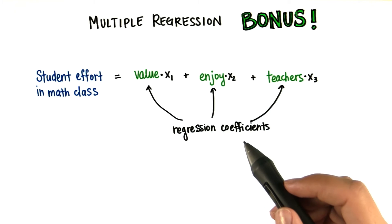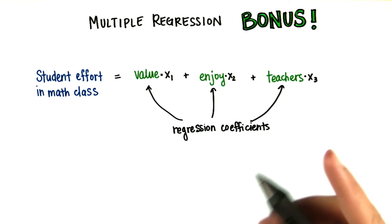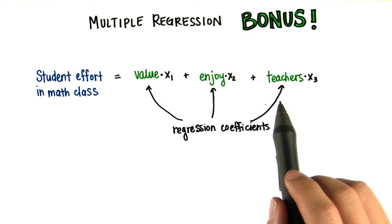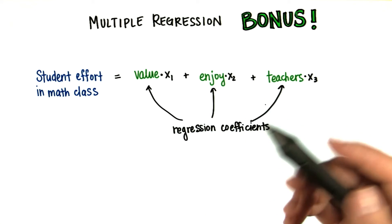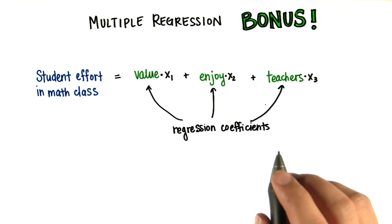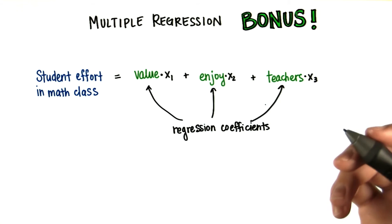These coefficients tell us the rate of change in y given a one unit change in each respective variable, holding the others constant. In other words, we see the mathematical influence of one variable while statistically controlling for the influence of the other variables.